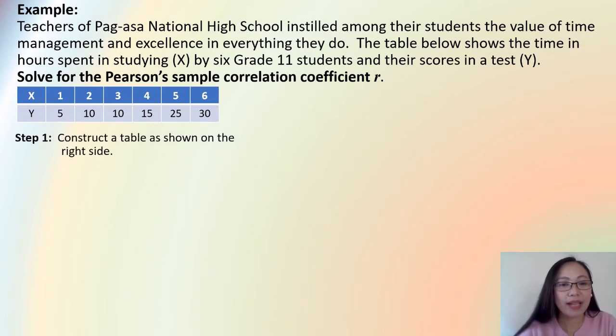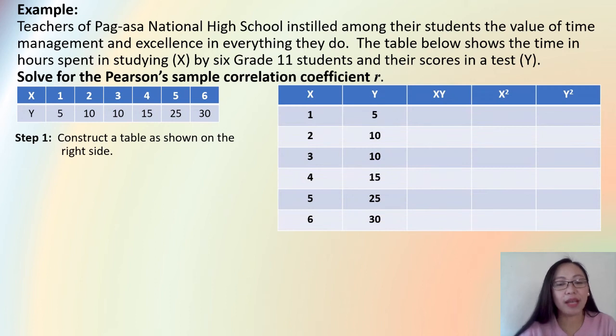Now, let us answer this step by step. So, let's look at step one. We will construct the table as shown on the right. So, here is the table, and you notice that we have written the data in columns. We have the data for X under this column, and then the data for Y written in this column. Second is, we complete the table.